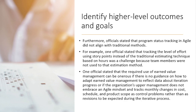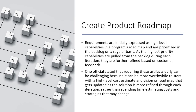What does that mean for you as a scheduler? In the world of Agile, we focus on the product roadmap. Requirements are initially expressed as high-level capabilities — could be in a product roadmap — and they're prioritized in the backlog. We call it a product roadmap, predominantly in the world of Agile. One official in government stated that requiring these artifacts early can be challenging because it can be more worthwhile to start with a high-level cost estimate and vision or roadmap that gets updated as the solution is more refined.